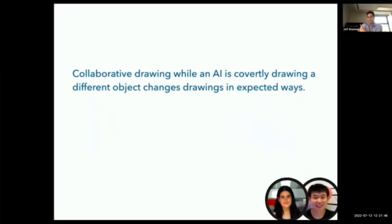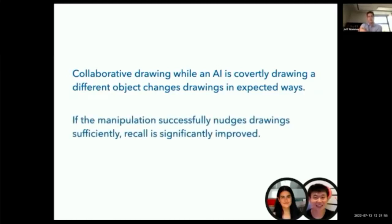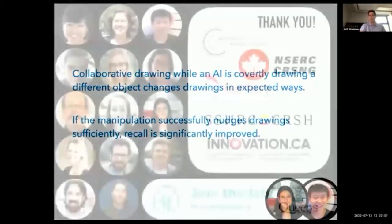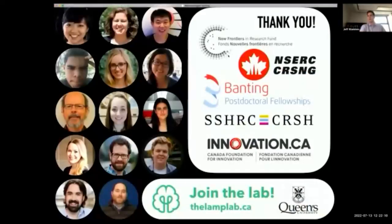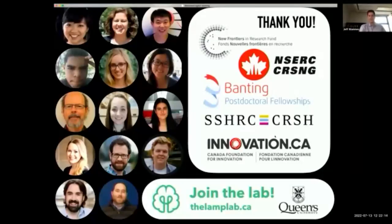So with the help of these undergrads, I think what we showed is that collaborative drawing works even if you have the agent draw something that's covertly competing against you—it behaves in expected ways. And if the manipulation successfully nudges drawings sufficiently, then recall is significantly improved, although there's still several sticks we have to poke that with to make sure that it holds up. So thank you so much for your attention, thank everyone who's involved with all of this work, and the people that were kind enough to give me money to do it. I'm ready for questions.